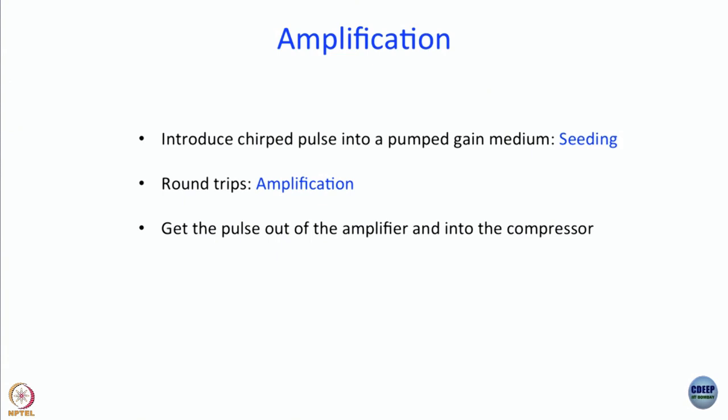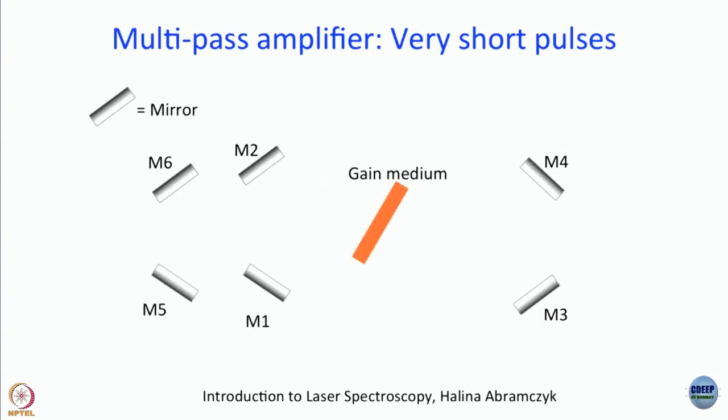How do you switch the pulse out of the amplifier? We will see. This is the general way in which amplification of an ultrashort pulse is done after being stretched. We are going to discuss two different kinds of amplifiers: one, the multipass amplifier, and second, the regenerative amplifier.